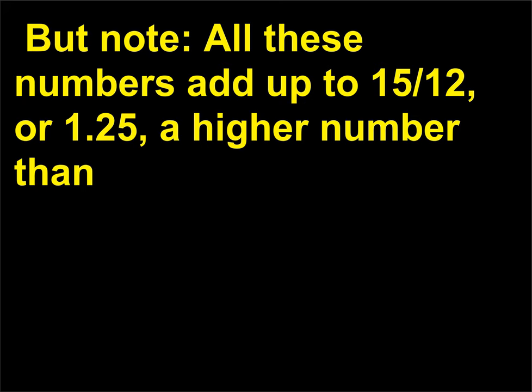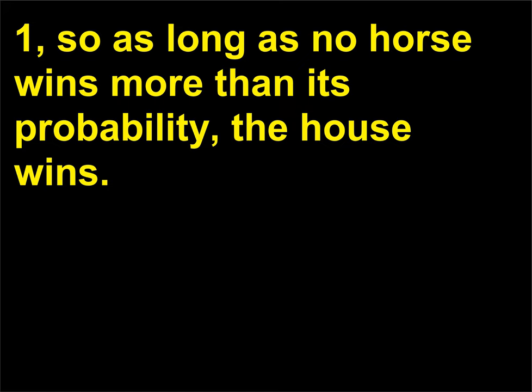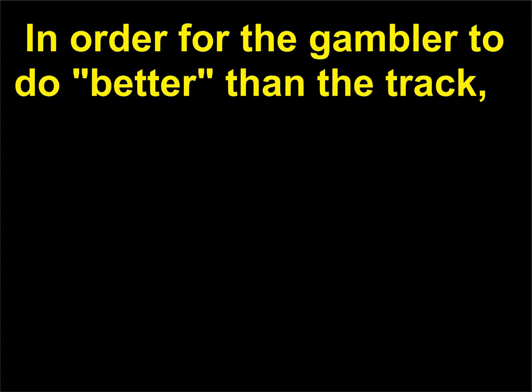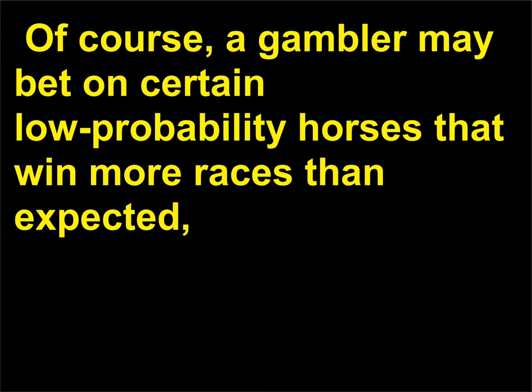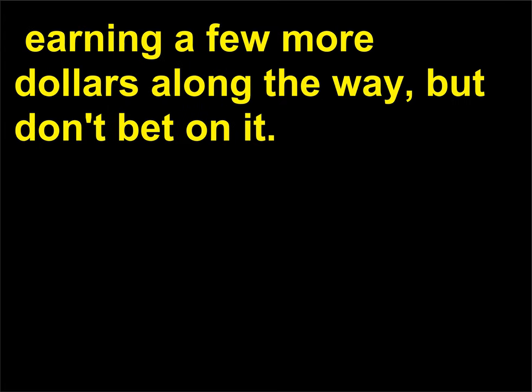But note: all these numbers add up to 15/12, or 1.25 — a higher number than 1. So as long as no horse wins more than its probability, the house wins. There's another way of looking at this type of betting: in order for the gambler to do better than the track, he or she has to win 15 times in 12 races — a physical and mathematical impossibility — which is why the track always makes money. Of course, a gambler may bet on certain low probability horses that win more races than expected, earning a few more dollars along the way, but don't bet on it.